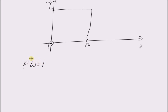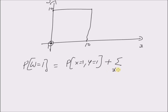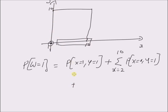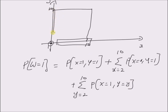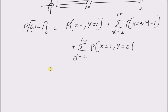Therefore, for P(W=1), we have P(x=1, y=1) plus the sum of probabilities of x equal to 2 to 10 with y=1 — that is, these values along the x-axis — and along the y-axis, we have y equal to 2 to 10, that is P(x=1, y=y) for those values. If you count all these values, it equals 0.01 × (1 + 9 + 9), which is equal to 0.19.